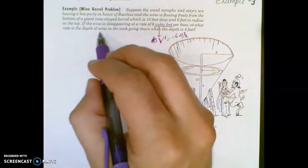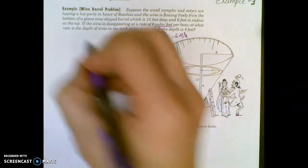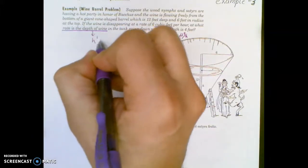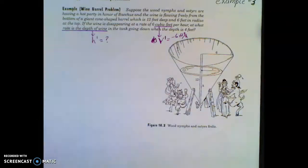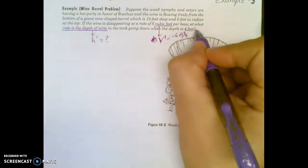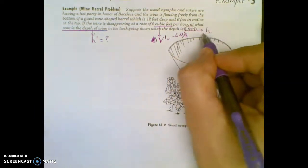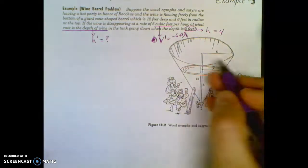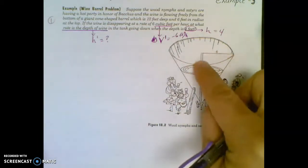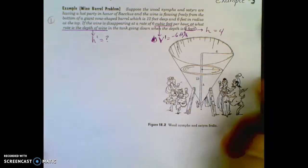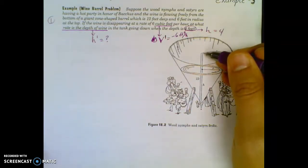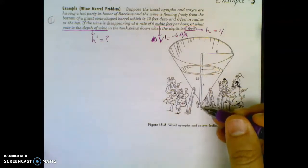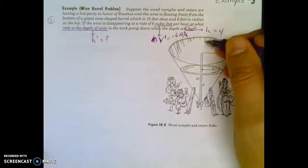Okay, that is a rate of change of the volume. And I would be careful to make sure I put negative 6 cubic feet per hour. So sometimes when I read these, I'll write down what I think they are already. What rate is the depth of the wine? So in this problem, the depth of the wine is h. So their question is, what is h prime? It's good to know. That's what we're looking for. In the tank going down, when the depth is 4 feet, that is just h.